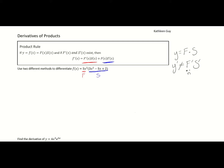Because both of these have a power of 1, you can actually just distribute 5x squared. Method 1 would be to first distribute the 5x squared, which gives us 15x to the fourth minus 25x cubed plus 10x squared. Then we take the derivative using the power rule: f prime of x equals 60x cubed minus 75x squared plus 20x. I'm doing this because here the power is 1, so I can distribute.